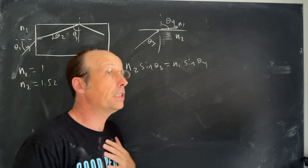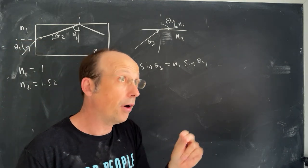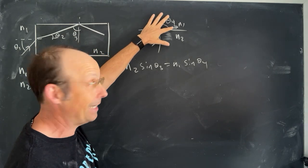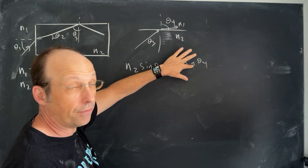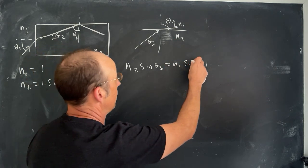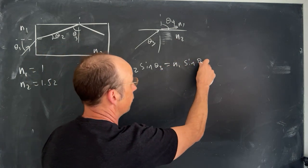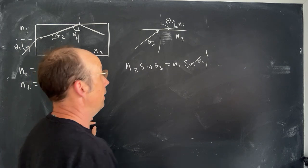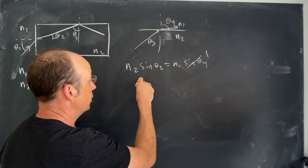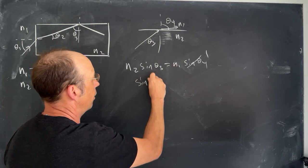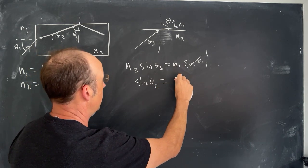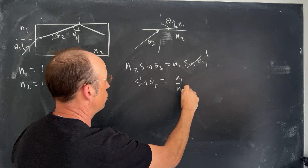But if it is totally, the critical angle is the angle that this refracted ray up here is 90 degrees. So the sine of 90 is, so I want theta 4 to be 90. I'm going to find the critical angle. So this is going to be a 1, right? The sine of 90 is 1. And then I want to find theta 3. So sine of, and I'm going to call it theta C for the critical angle, it's going to be equal to N1 over N2.